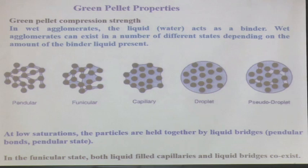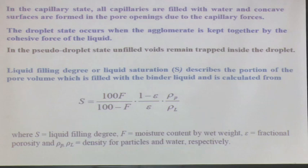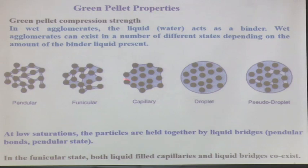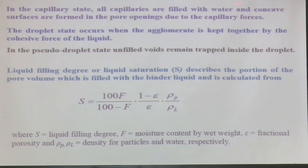At low saturations, particles are held together by liquid bridges — the pendular bonds or pendular state. Adding a bit more moisture, the bonds start forming because of this pendular structure. Adding a little more, you move from pendular to funicular stage where both liquid-filled capillaries and liquid bridges coexist. In the capillary state all capillaries are filled with water and concave surfaces are formed at the pore openings due to capillary forces. The droplet state occurs when the agglomerate is kept together by the cohesive force of the liquid.